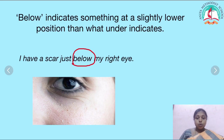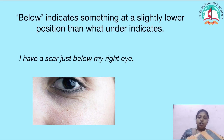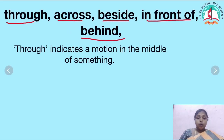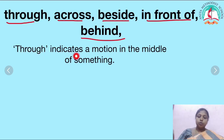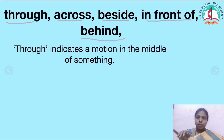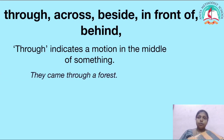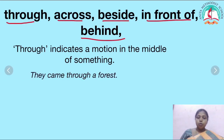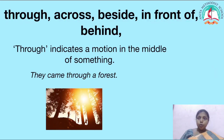Now let's see where to use through, across, beside, in front of, and behind. Through indicates a motion in the middle of something — motion meaning something moving. For example: the train moves through the tunnel. They came through a forest — they are walking through the forest. Through is used where we can move into something.